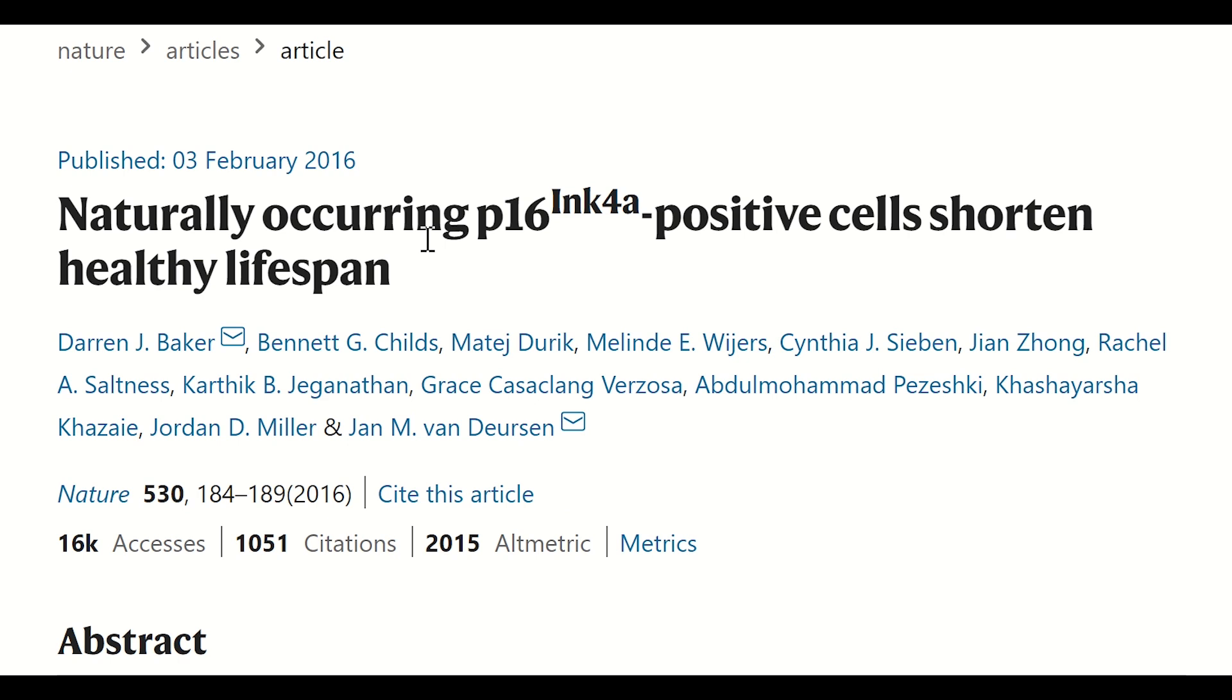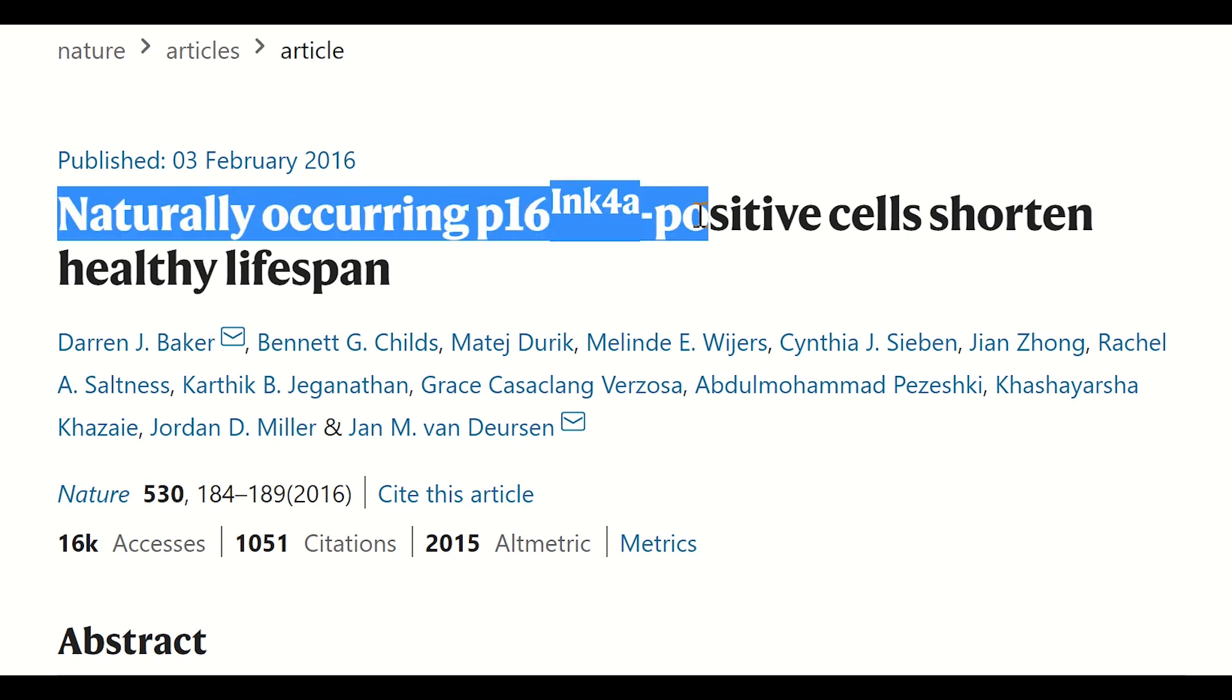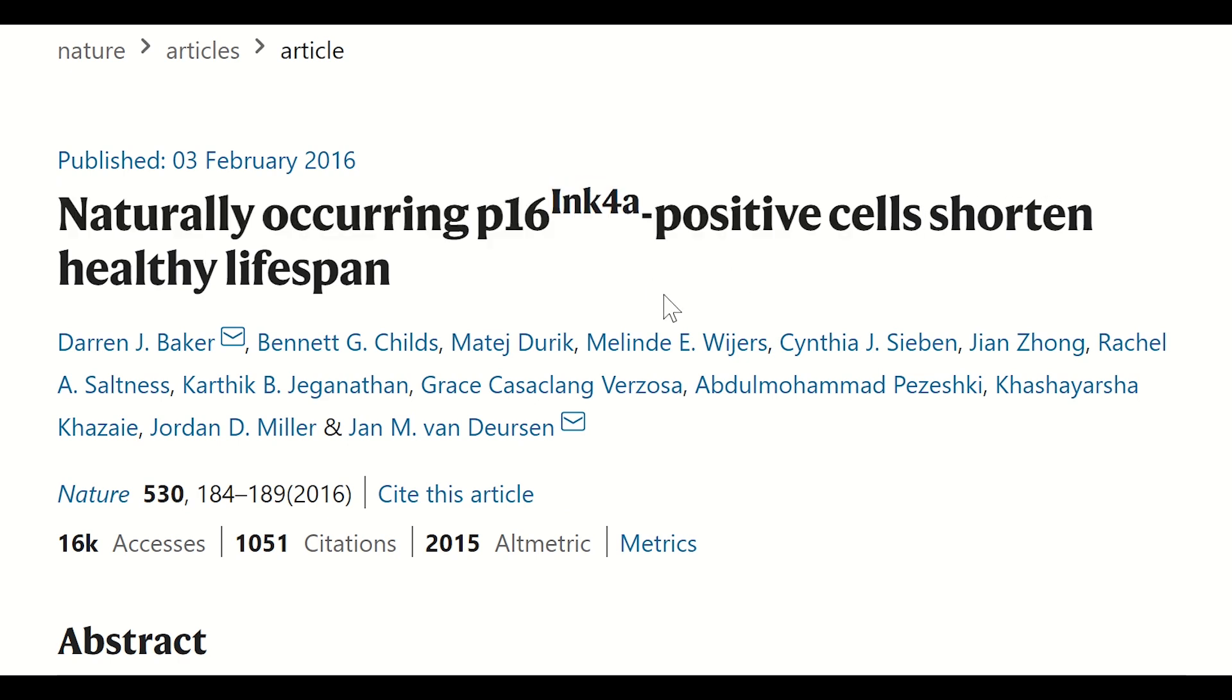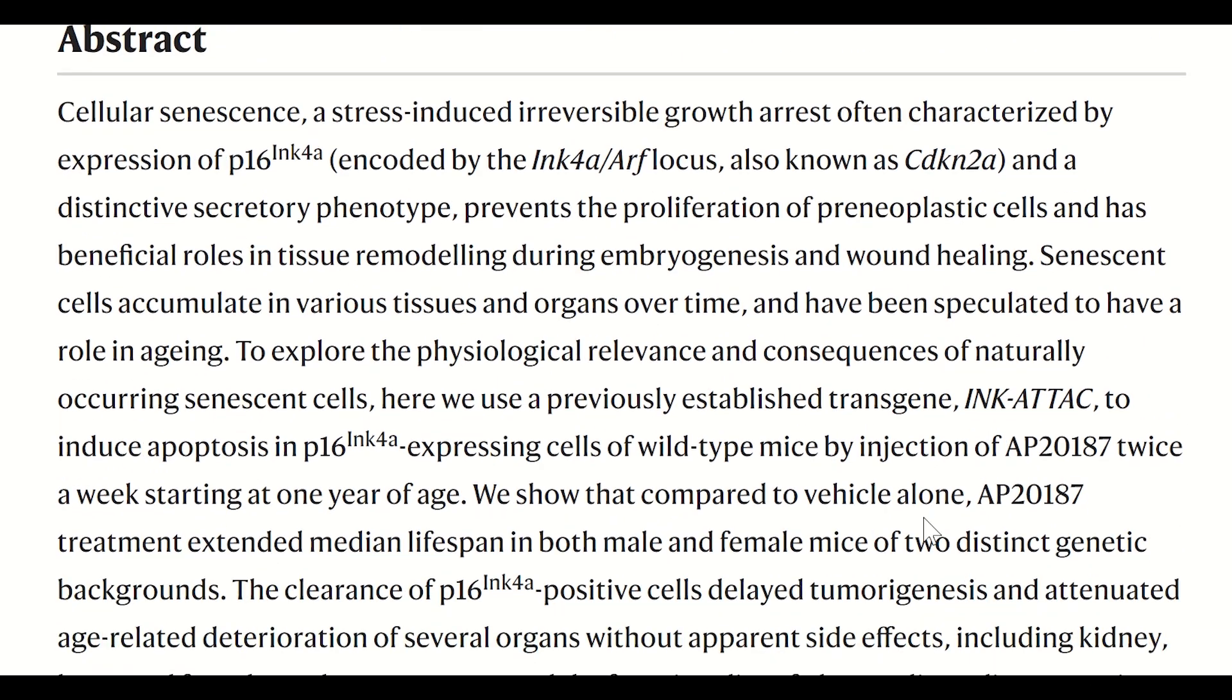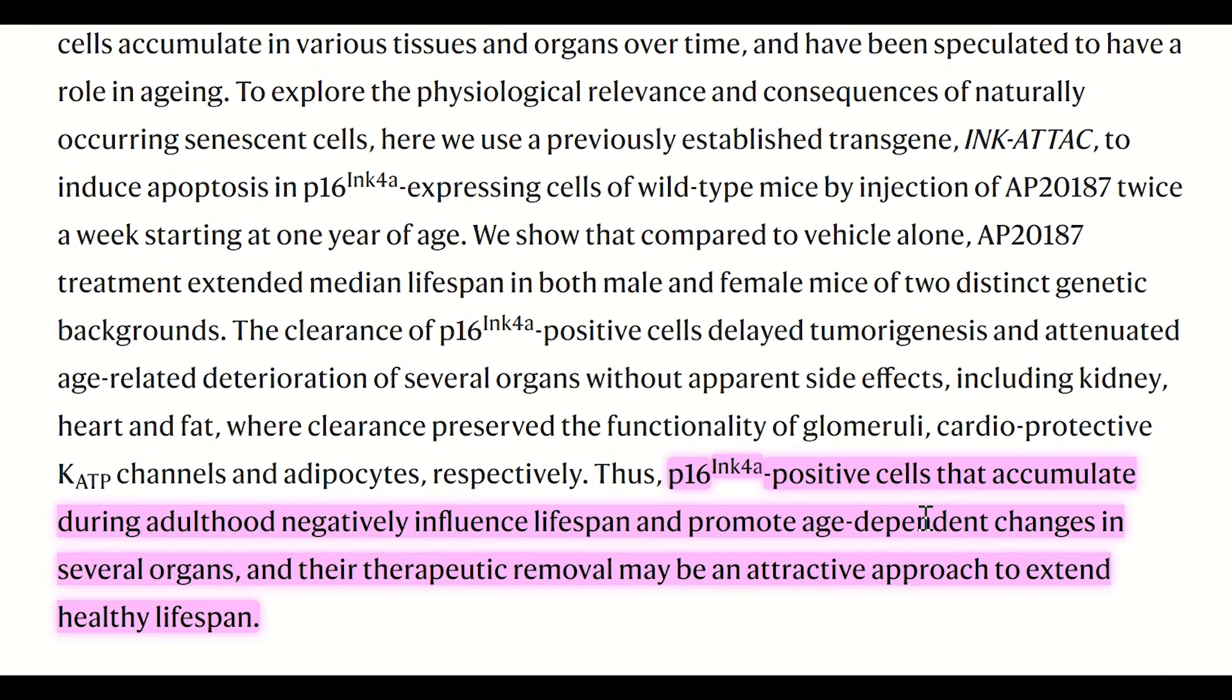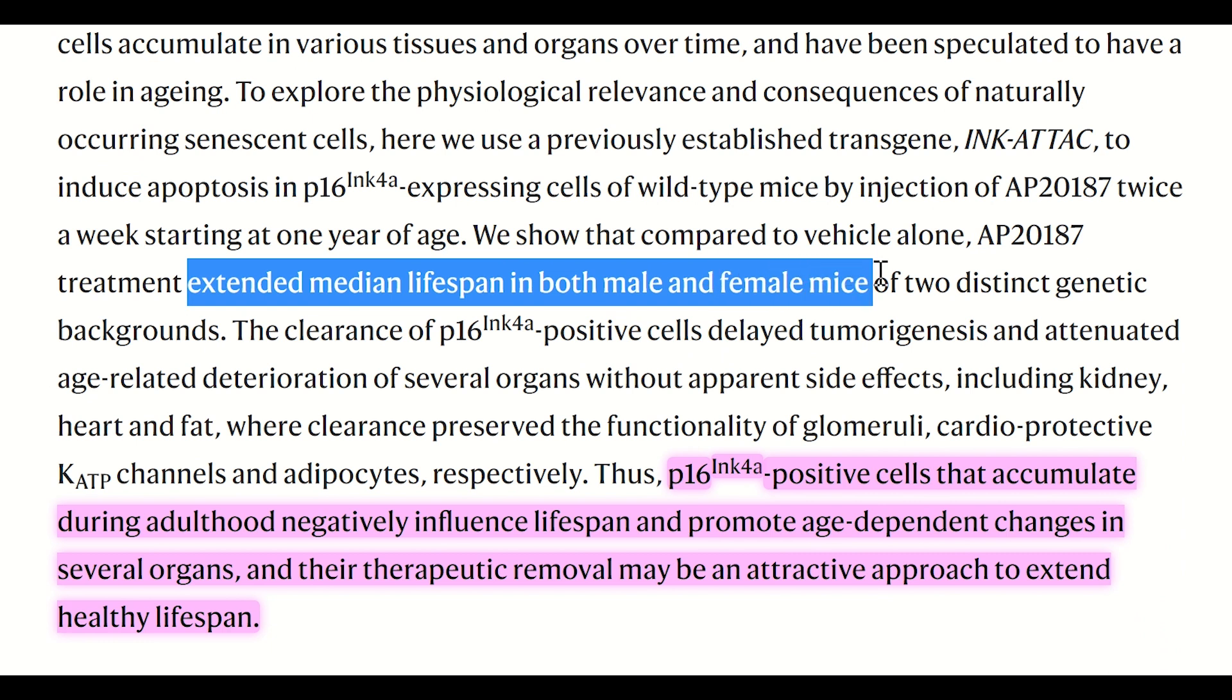In a different study, they used a genetic approach to clear senescent cells expressing p16, which is an important gene in mediating the cell cycle arrest. And what they found is that in mice that had the clearance of p16 expressing cells, compared to the control mice, it extended the median lifespan in both male and female mice, suggesting that the presence of senescent cells is shortening healthy lifespan.